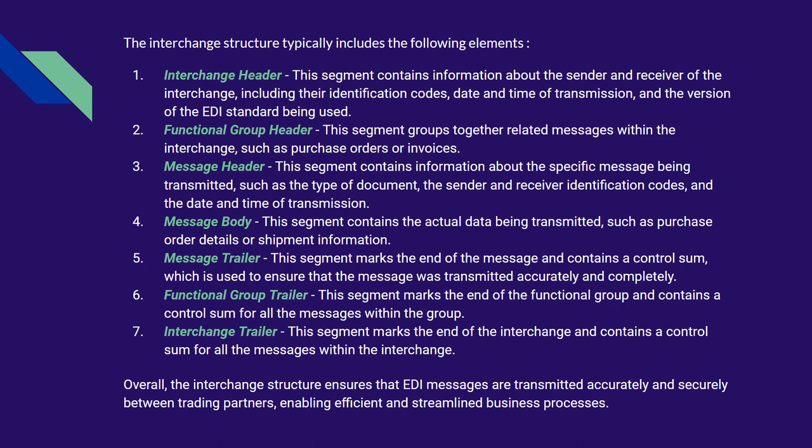Message Body: This segment contains the actual data being transmitted, such as purchase order details or shipment information. Message Trailer: This segment marks the end of the message and contains a control sum, which is used to ensure that the message was transmitted accurately and completely. Functional Group Trailer: This segment marks the end of the functional group and contains a control sum for all messages within the group.